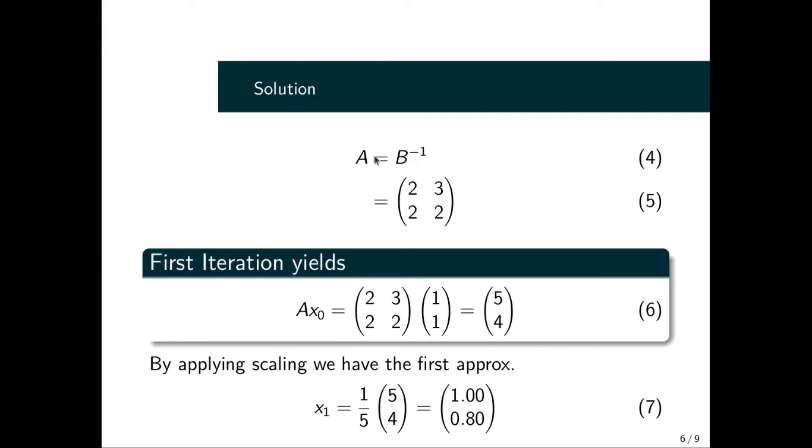Considering the matrix B that we have here, we find the inverse of matrix B, which gives this 2×2 matrix. Then we go ahead to do our first iteration, which is Ax₀, expressed as this column vector. We consider the maximum value in terms of magnitude, which is 5, we scale it, and then we get this column vector that we have seen in equation (7).